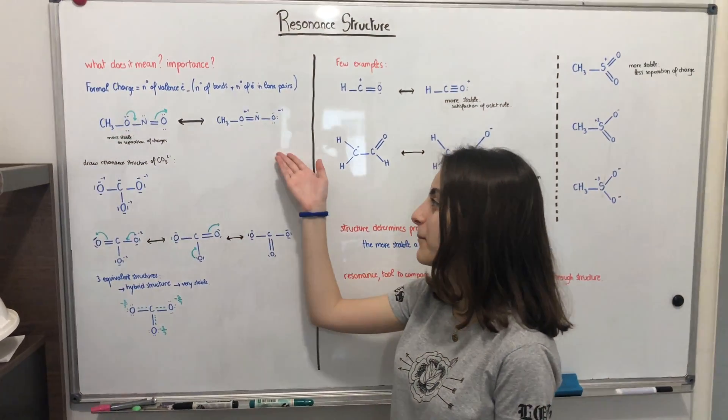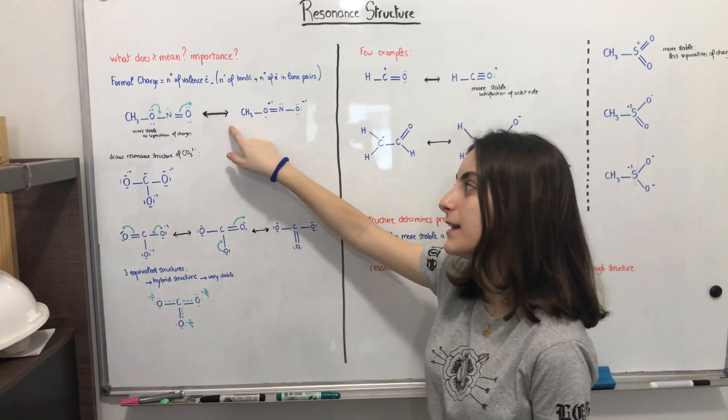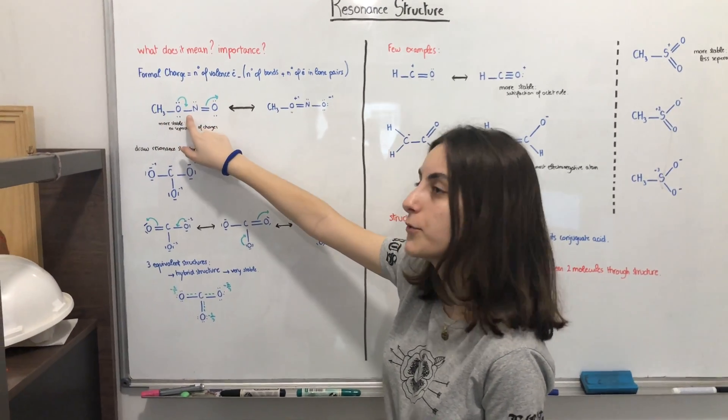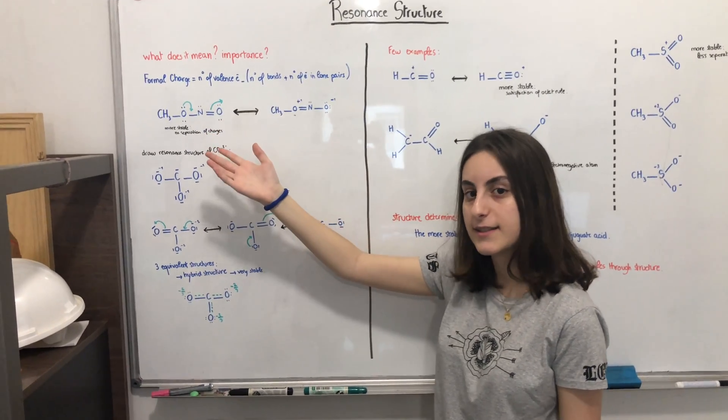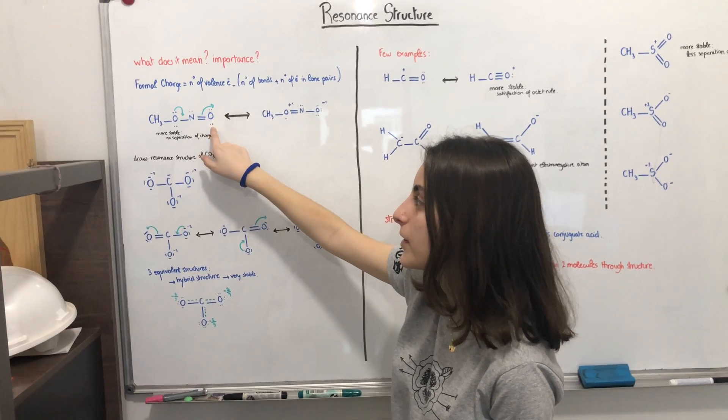Let's take a look at this example. Here we have a resonance structure because we have a double-headed arrow. The lone pair of the oxygen atom comes to form a bond here. But because N is a second-row element, it cannot exceed the octet rule. And so here the double bond becomes a lone pair for the oxygen.